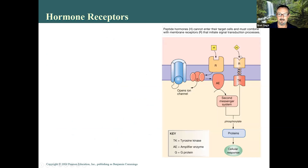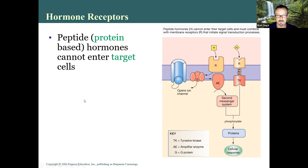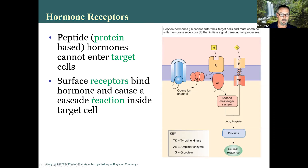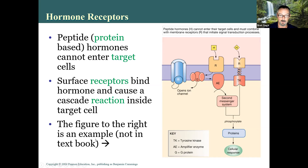Peptide or protein-based hormones cannot enter target cells — they bind surface receptors and cause a cascade reaction inside. Notice that both protein-based and peptide hormones are correct answers if asked which hormone cannot enter target cells. The hormone binds the surface and a cascade of chemical reactions produces a cellular response, which can include opening an ion channel or triggering a second messenger system that affects proteins and produces a cellular response.